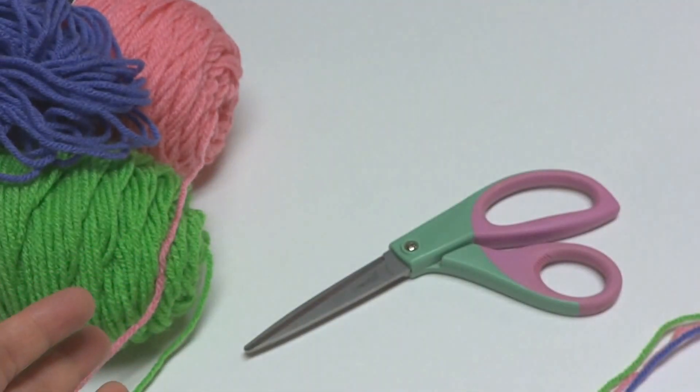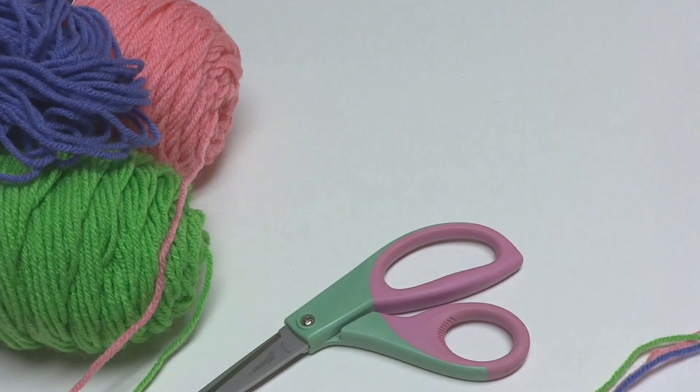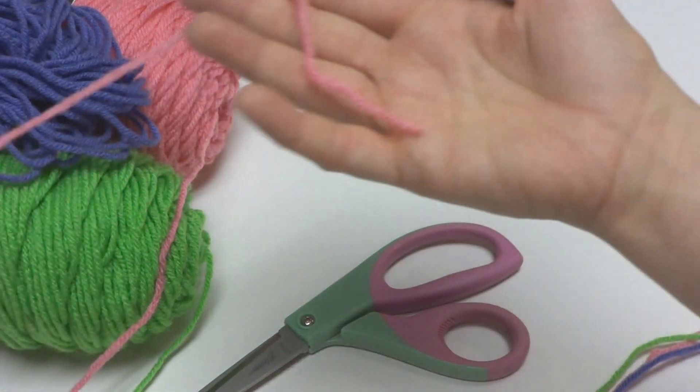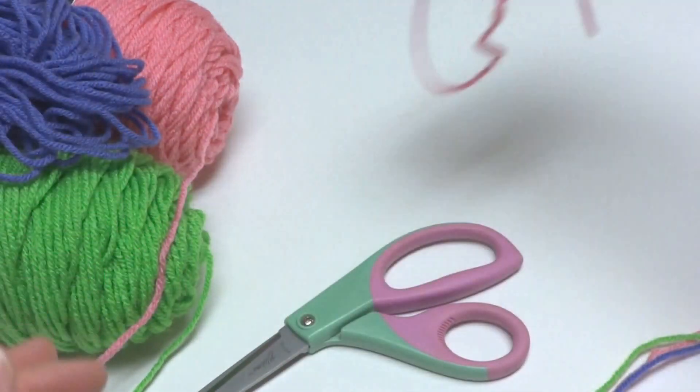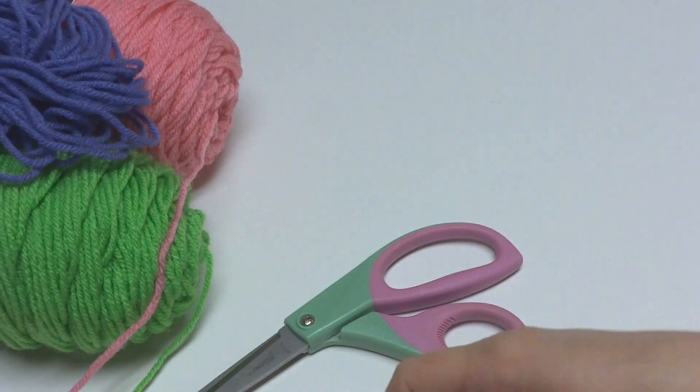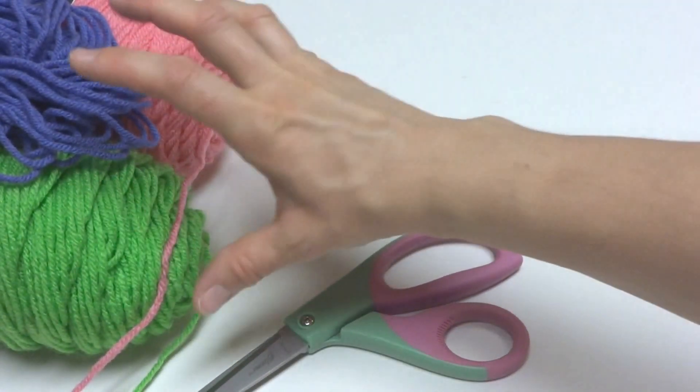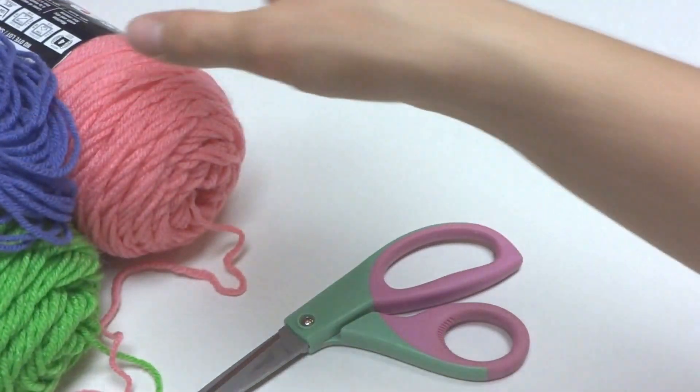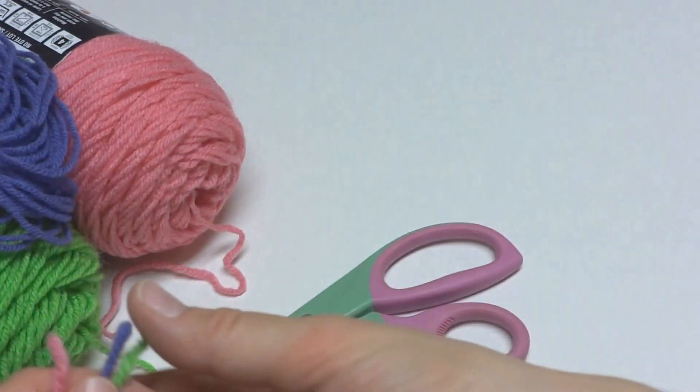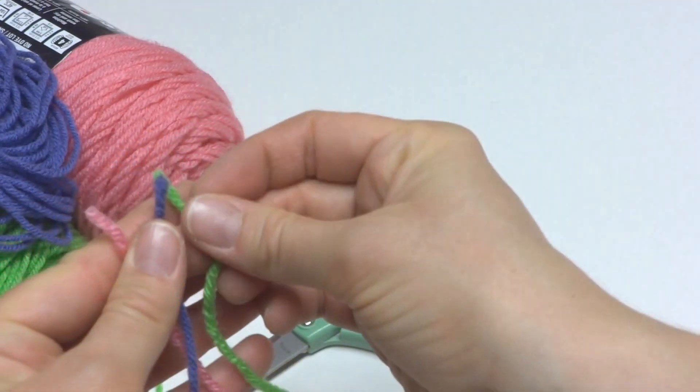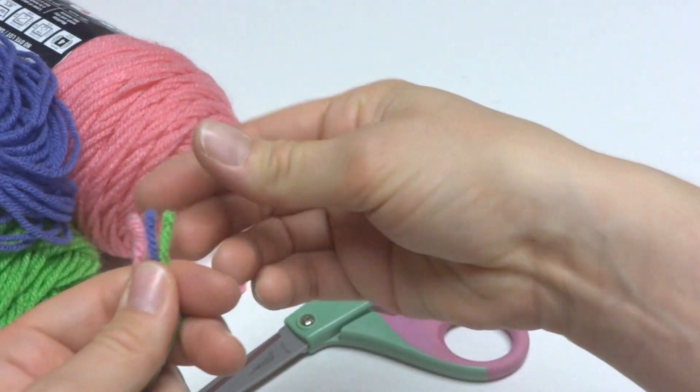So let's get started. To begin, you're going to want to cut roughly a 12 inch strand of yarn and set it aside. Then you're going to take your strands. I have here just some purple, green, and pink, something I had on hand. And you're going to line those up at the bottom, just like that.